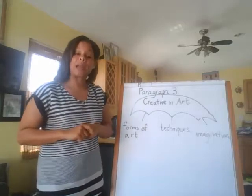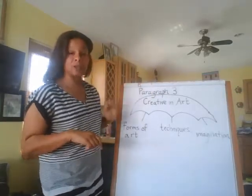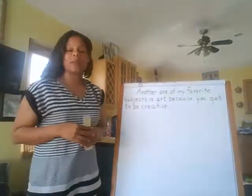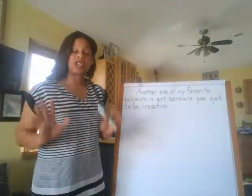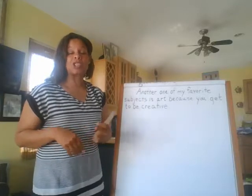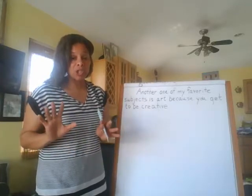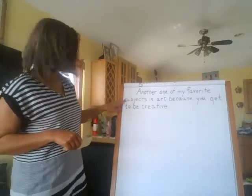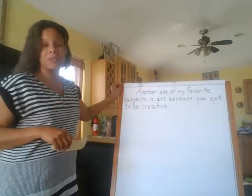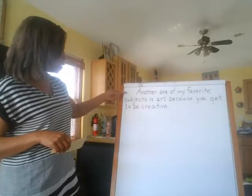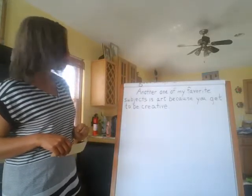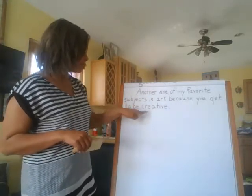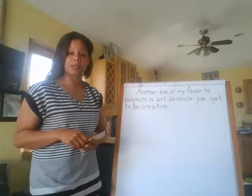The first thing we have to write is a topic sentence talking about art being creative. For these paragraphs, I just want you to get the general idea of how to start it off. As you get more comfortable, you can change your intro and how you start your sentences. Make sure you always indent your new paragraphs. My topic sentence is: 'Another one of my favorite subjects is art because you get to be creative.'